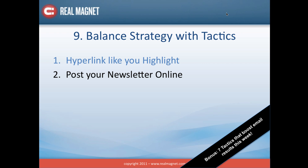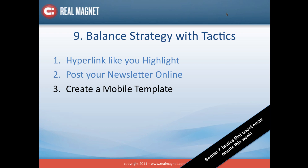Third is create a mobile template. This is about email rendering on a mobile device. A recent Return Path report found that mobile email opens have increased 34% over the last six months, and some of our clients are reporting that as many as 40% of their opens for certain messages are occurring on mobile devices. Mobile devices include your mobile phones, iPads, and other tablets. More and more of your subscribers are receiving their emails on mobile, so the easier you can make it for them to read and react to those messages, the better it's going to be for your program.